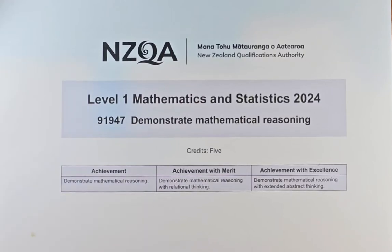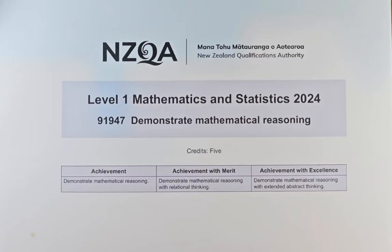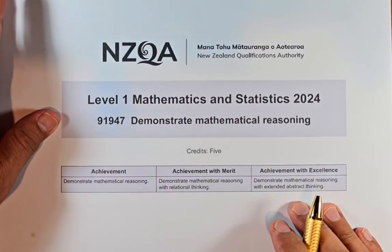Good day! In this video, we are going to try and solve question 3C part 1 and part 2 of the 2024 Demonstrate Mathematical Reasoning exam paper titled number 91947. This is 5 credit internal and without further ado, let's do question 2C part 1 which is achieved and then 2C part 2 which is excellent.